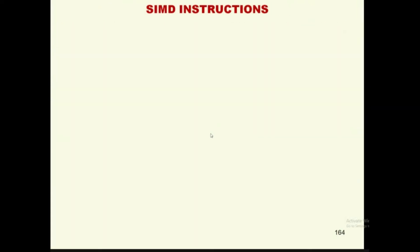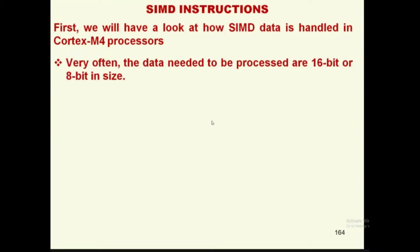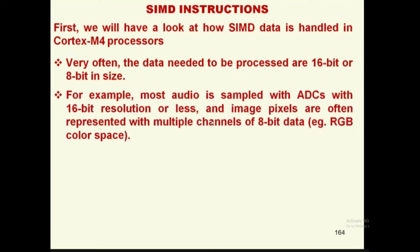Let us start with SIMD instructions — Single Instruction Multiple Data. Very often, data needed to process are 16-bit or 8-bit in size. For example, most audio is sampled with ADCs with 16-bit resolution or less. For image processing, image pixels are often represented by multiple channels of 8-bit data, such as RGB color space. So mostly image data is 8-bit, and ADC outputs may be 8-bit, 10-bit, 12-bit, or most commonly 16-bit.